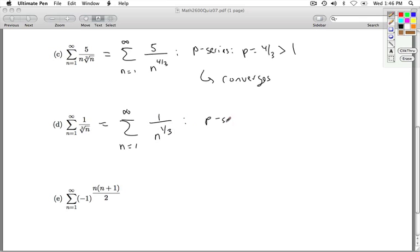This is another P series. P equals 1 third. And what's important about that, it's less than or equal to 1, which means it diverges.